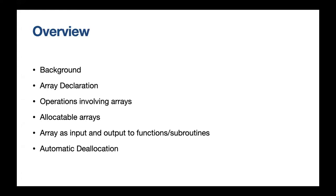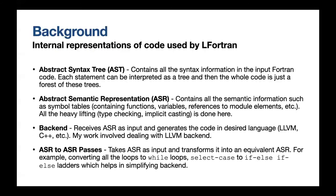I will provide a background of LFortran and then the list of features I worked on during my GSoC. This is about the internal representations of code used by LFortran. First is the abstract syntax tree, which contains all the syntax and information in the Fortran code. You can consider a statement as a tree, and the whole code can be represented as a forest of these trees. The AST contains only syntax information — no type information.